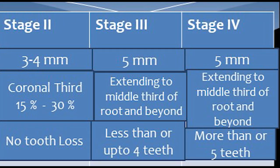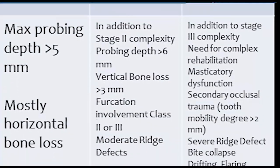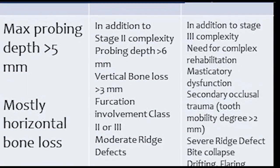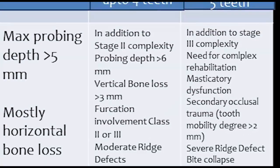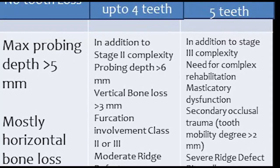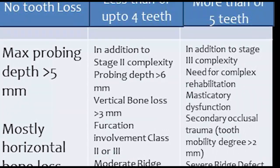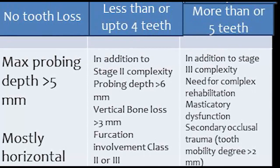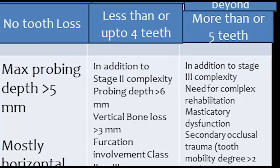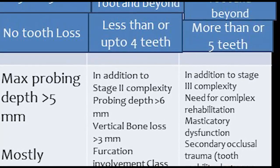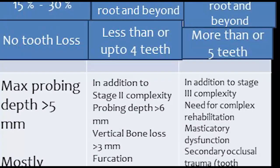Now we come to Stage 3. Stage 3 is clinical attachment loss of 5 mm or more. The RBL is extending to the middle third of the root or beyond. There are tooth losses — less than or up to 4 teeth. In addition to Stage 2, the probing depth will be more than 6 mm, and vertical bone loss will be more than 3 mm. In Stage 1 and Stage 2, we only considered horizontal bone loss, but in Stage 3, we are going to check the vertical bone loss as well, and it should be more than 3 mm.